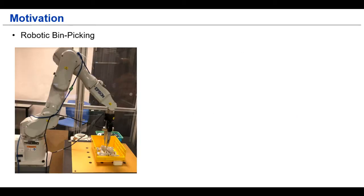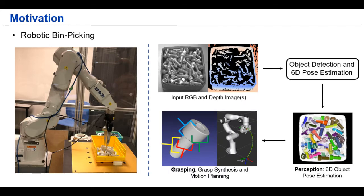Bin picking is a very important problem in both computer vision and robotics. The goal is to have the vision-guided robot to pick up objects with random poses in the bin. Given the input RGBD data, the bin picking solution generally follows a two-step strategy, the object detection and the 6D pose estimation, followed by the grasp synthesis and motion planning.